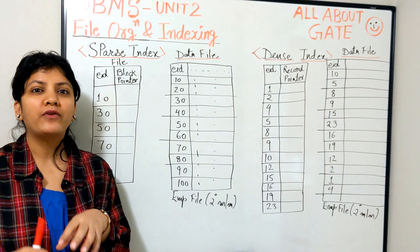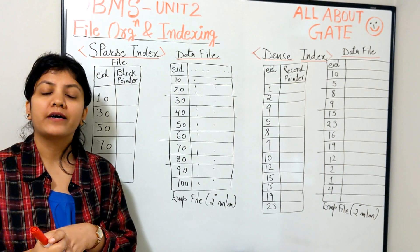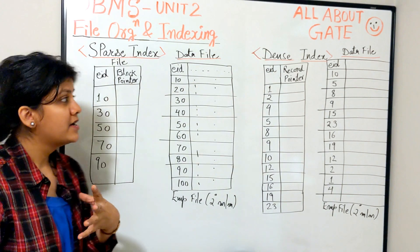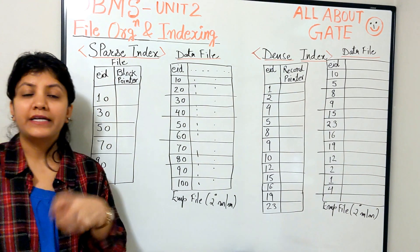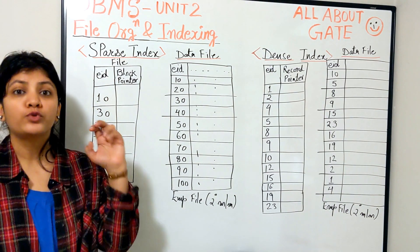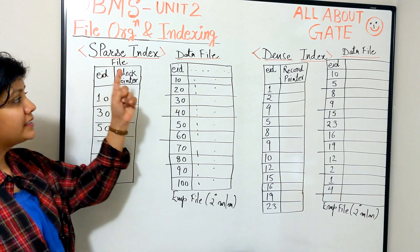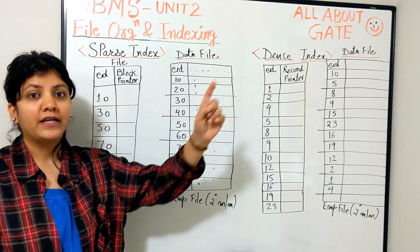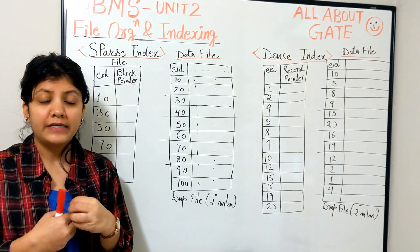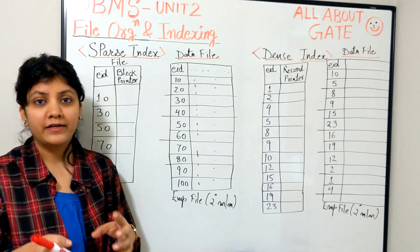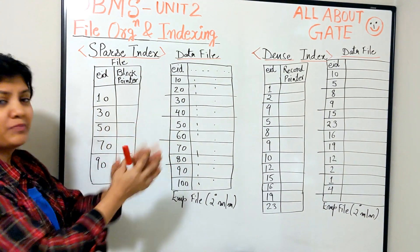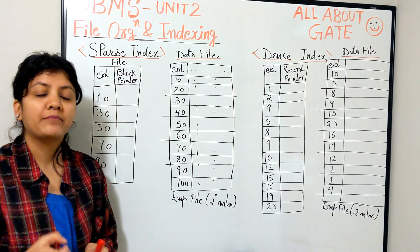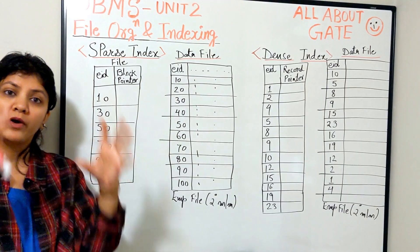Let's understand one very important factor about index files, where we categorize an index file into two categories: one is a sparse index file and the other is a dense index file. What are they and how are the two different? Let's understand from these pictures. I am considering as an example that we have an employee file.